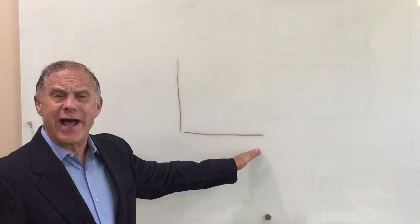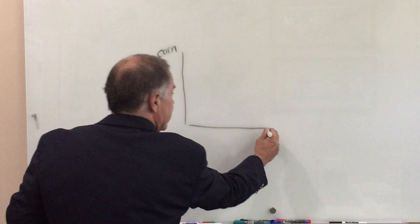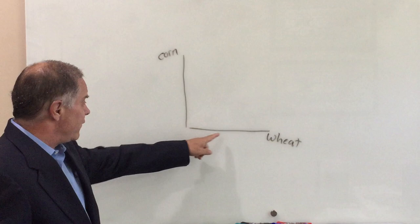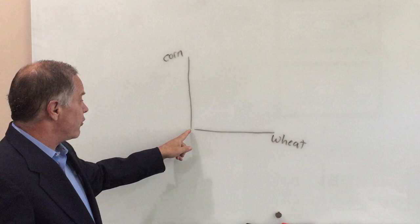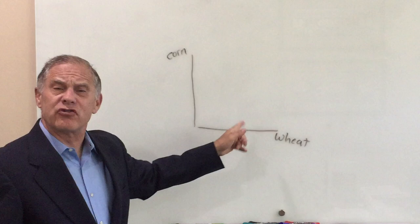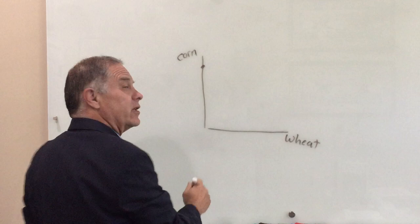Let's start with the example of a farmer. Let's say a farmer has land and he can grow corn or wheat. Now, the way this graph works, if he grows zero wheat and all corn, you go up this axis. If he grows zero corn and all wheat, you go down this axis. And of course, he'll grow some combination of the two.